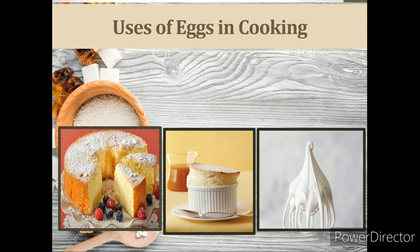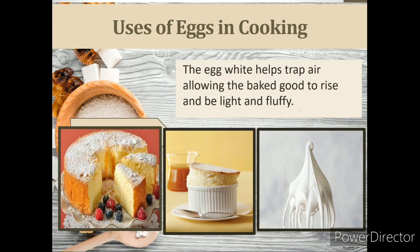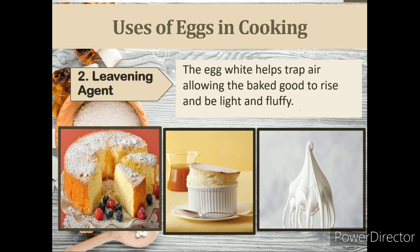The next use of eggs in cooking is as a leavening agent. A leavening agent is a substance causing expansion of dough and batter by the release of gases within such mixtures, producing baked products with an absorbent structure. Foam is created when egg white is beaten — it is made of bubbles surrounded by a thin elastic film of egg whites. When the foam is incorporated into a mixture, it provides leavening for such products. Examples are omelets, soufflés, sponge cakes, and meringue.